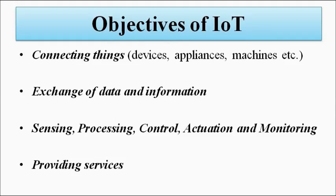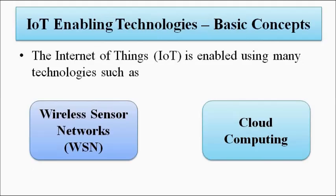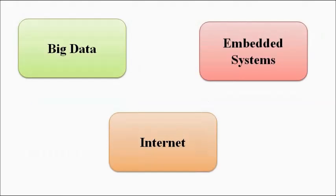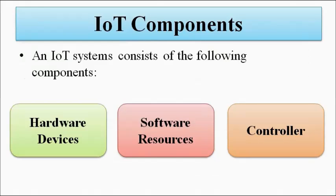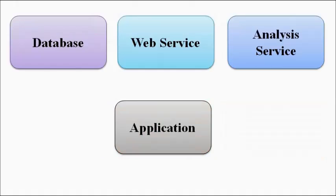Here the various key technologies which we have already discussed come into play: wireless sensor networks, cloud computing, big data, embedded systems, and the Internet brings all these things together. Now, the various components involved in the formation of an IoT system — no matter for whichever objective or purpose it is designed — are these.